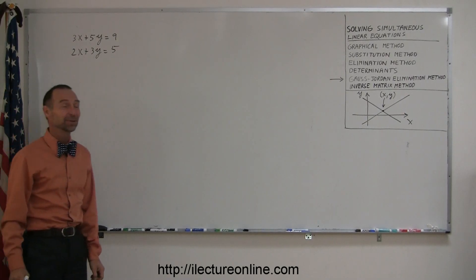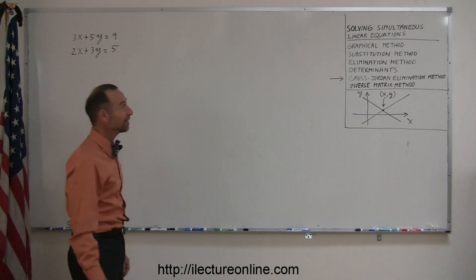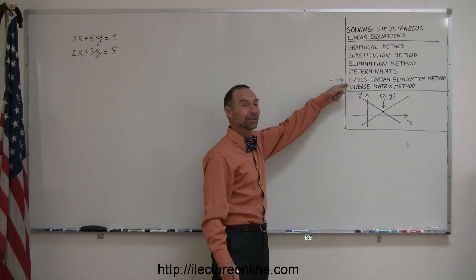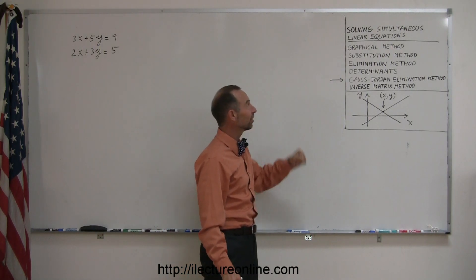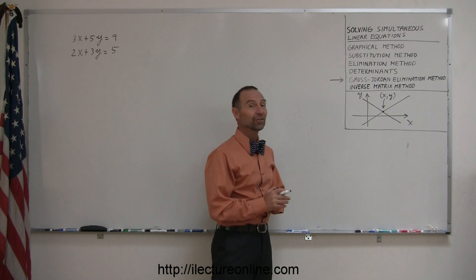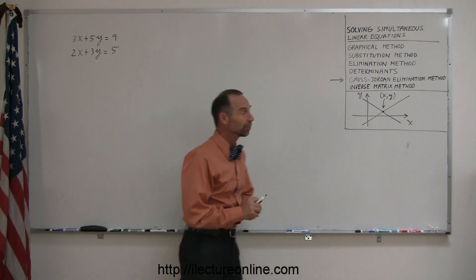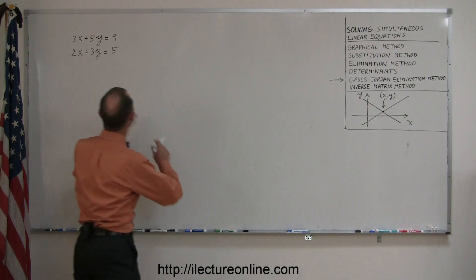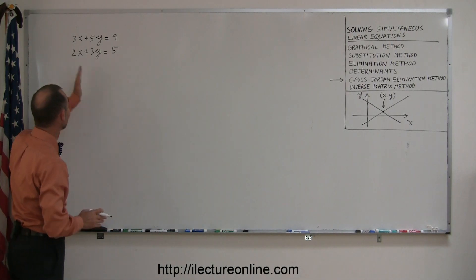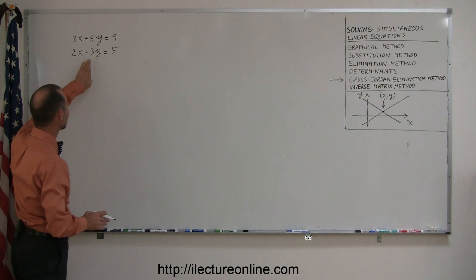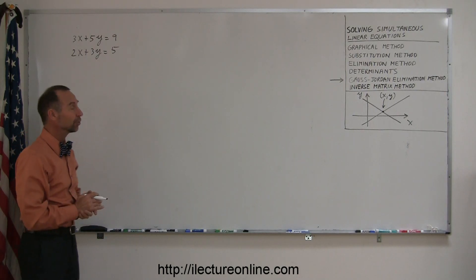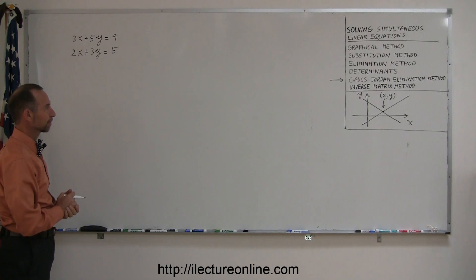Welcome to another good example of using the Gauss-Jordan elimination method, one of the many methods that you can use to solve simultaneous linear equations. Here are two linear equations already in the correct format. You have the x and the y on the left and the constants on the right, and that's an absolute must if you're going to use this method.